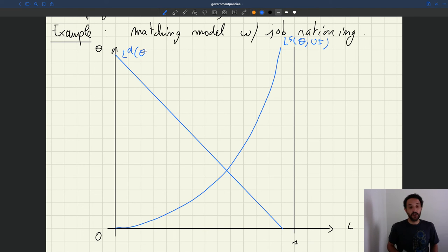So here, notice that the labor demand does not depend on UI, because usually the labor demand may depend on UI if wages respond to UI. But here we are focusing on models in which wages do not respond to UI, which seems to be what we see in the real world. So here the labor demand only depends on theta.